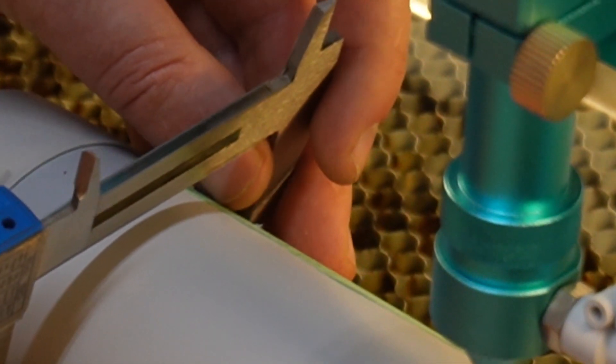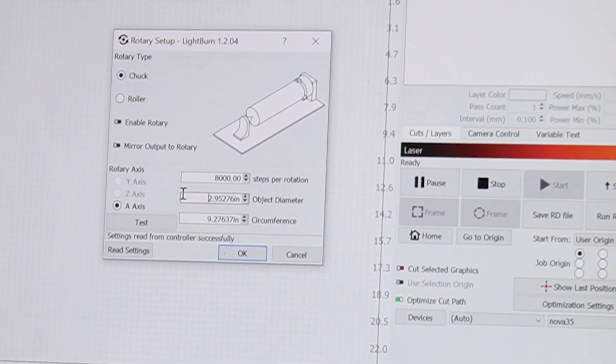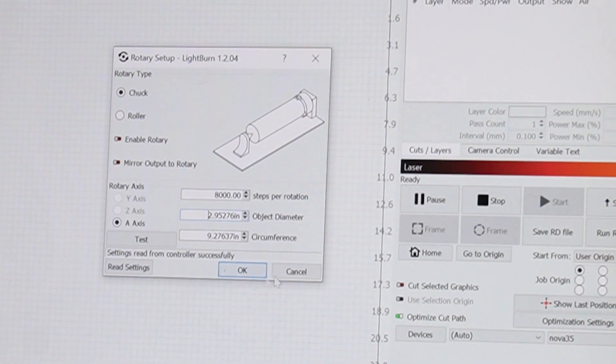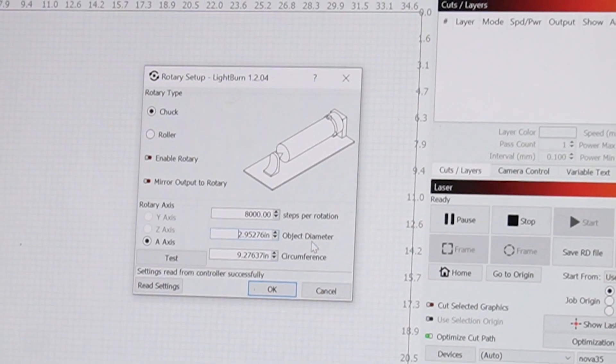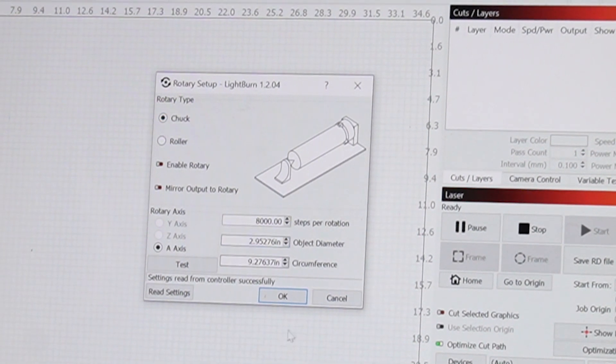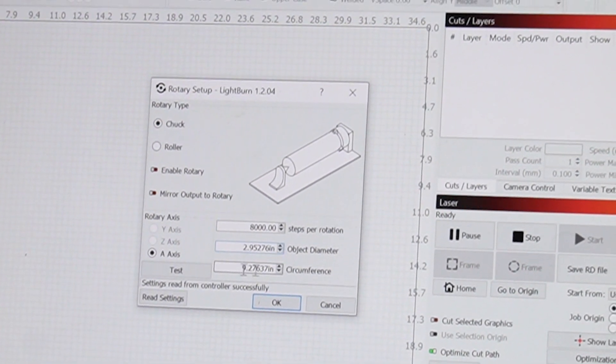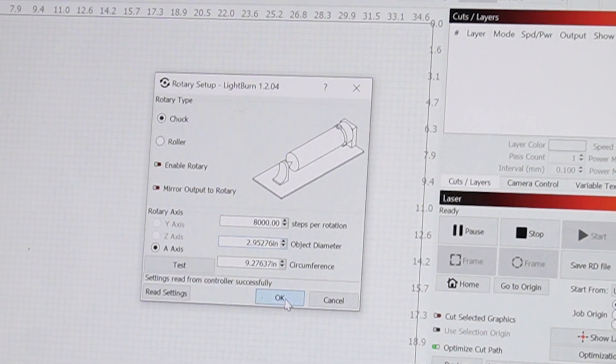We're going to use our handy calipers to measure the width of our mug. This one's saying 74.6, which just happens to be about just under three inches. So we're good to go. We're set up. So we've got our object diameter in there, our steps for rotation. We have this set up to rotary type of chuck. And our circumference is calculated off the object diameter. So you don't need to set that. So we'll click okay.